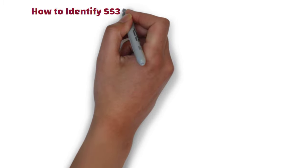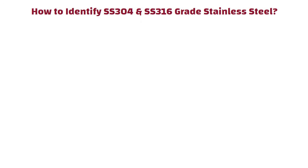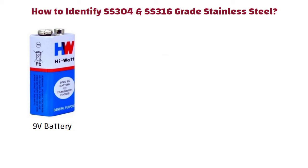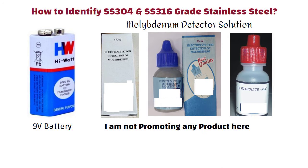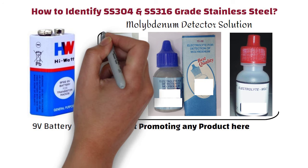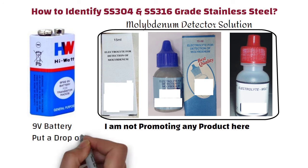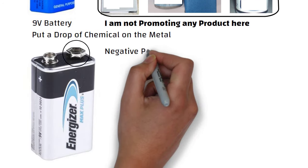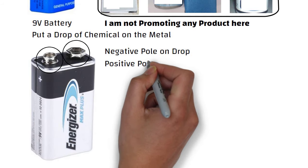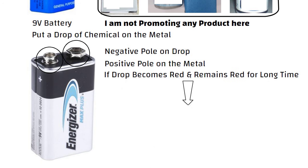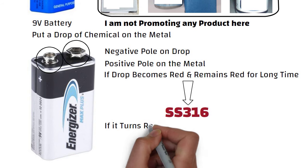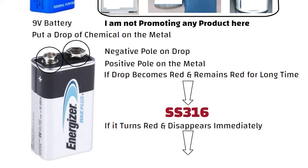Now, let us understand how to identify SS304 and SS316 grade stainless steel. You need a 9V battery and a molybdenum detector chemical available in the market. If you want to check similar chemicals, just type 'molybdenum detector solution' on Google and you will get a list of chemicals. You just have to put a drop of chemical on the metal, then put the negative pole of the 9V battery on the drop and the positive pole on the metal. Then remove the current and observe. If the drop becomes red and remains red for a long time, then it is SS316. If it turns red and disappears immediately, then it is SS304.